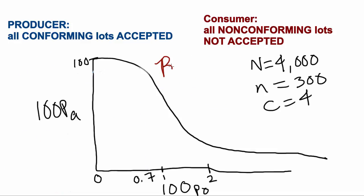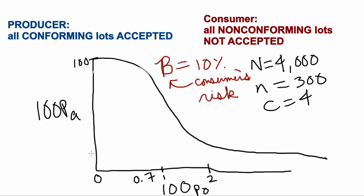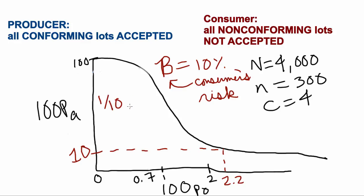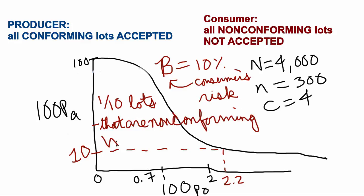Now let's switch hats and pretend we're the consumer. We have another new term called the consumer's risk, or beta. What we need to do is determine the percent non-conforming at a probability of acceptance of 10%. In this case we get 2.2% non-conforming. What this tells us is that if we're willing to take a 10% consumer's risk, then one out of 10 lots that are non-conforming will be accepted.